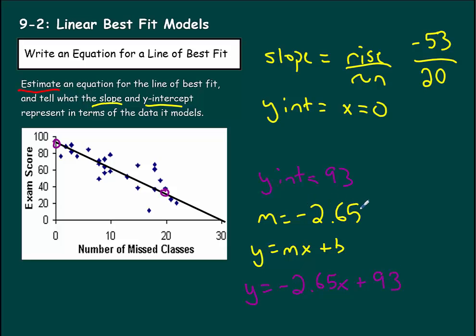So what does the slope mean? Well, that means for every class that you skip, you can expect a negative 2.65% drop in your exam score. And obviously, that's not always going to be the case. Some people fare better than others, as we can see. So you might do better than that. You might do worse than that. And the y-intercept is when x equals 0. So that means when your number of missed classes is 0, you can expect about a 93% on your exam score.